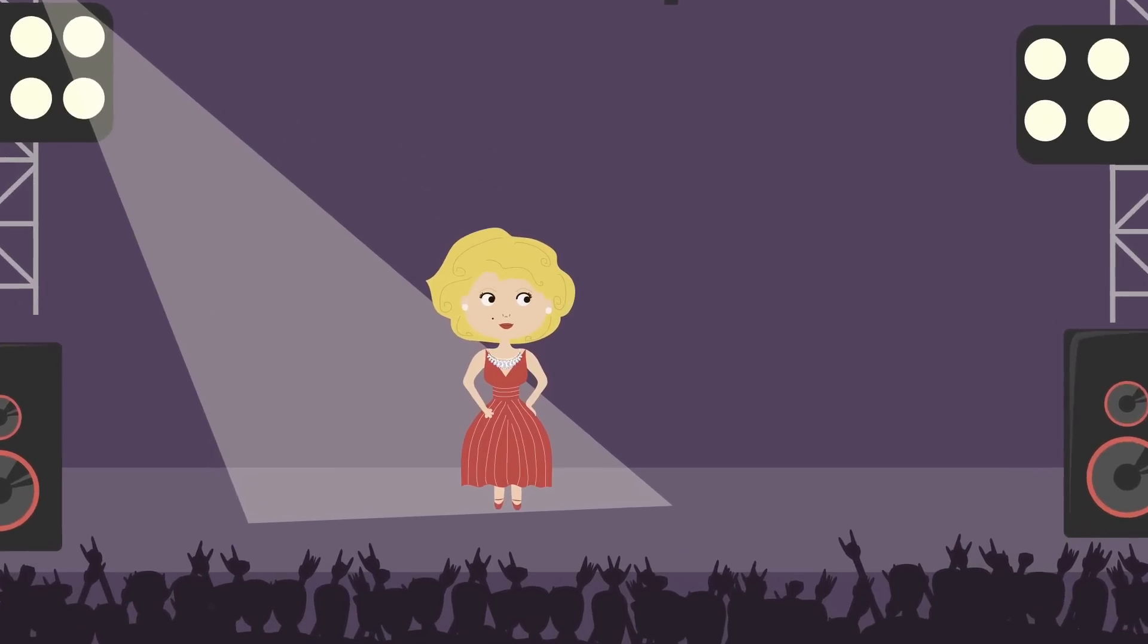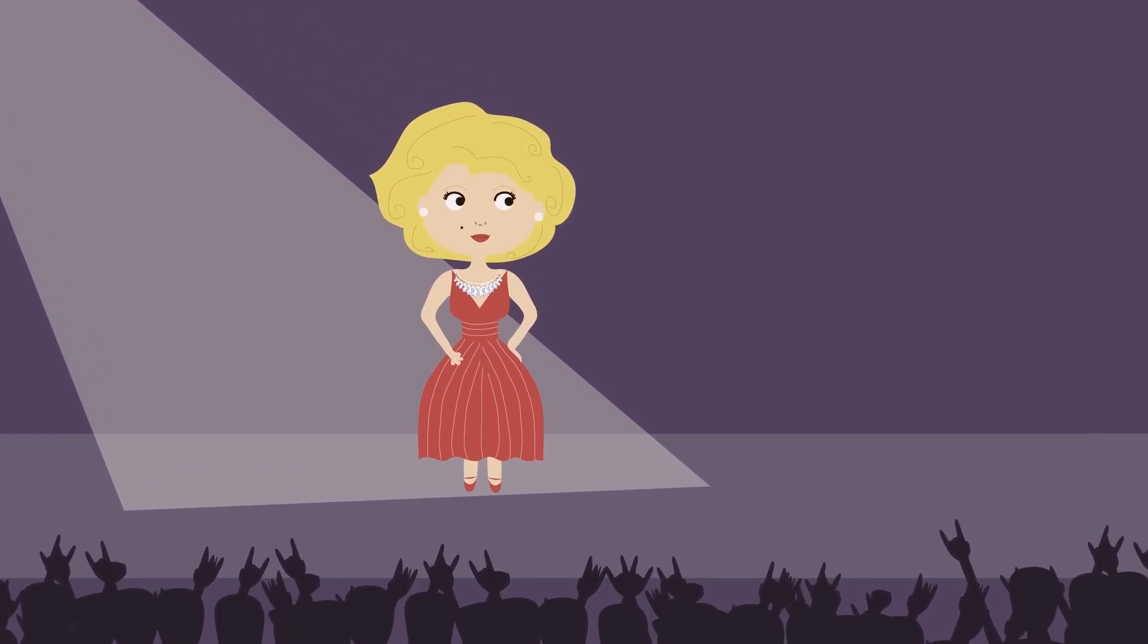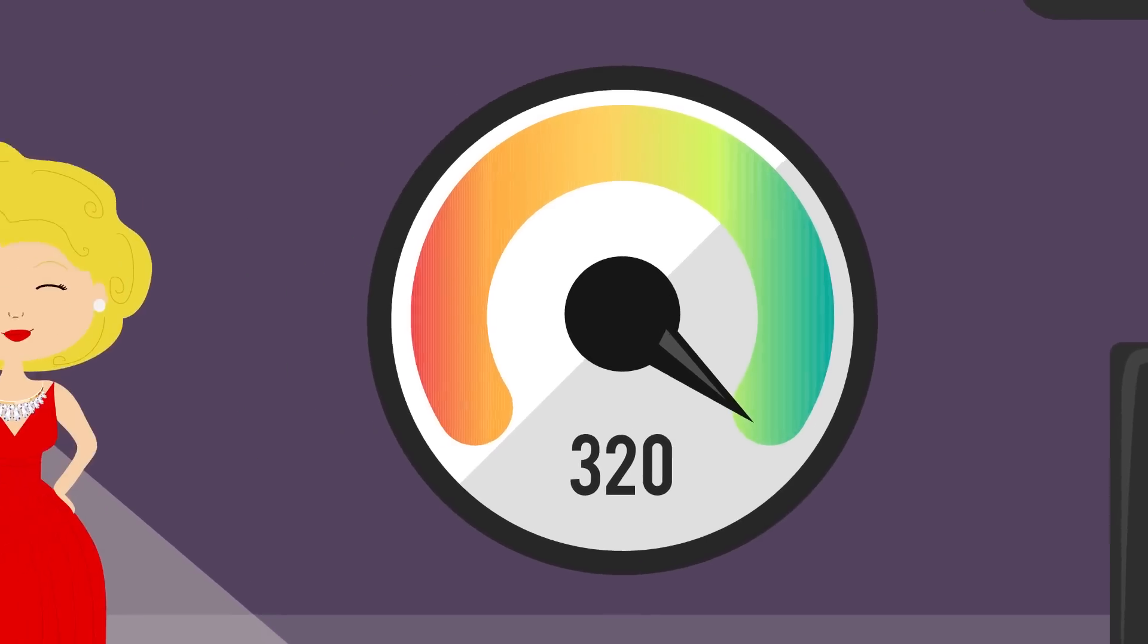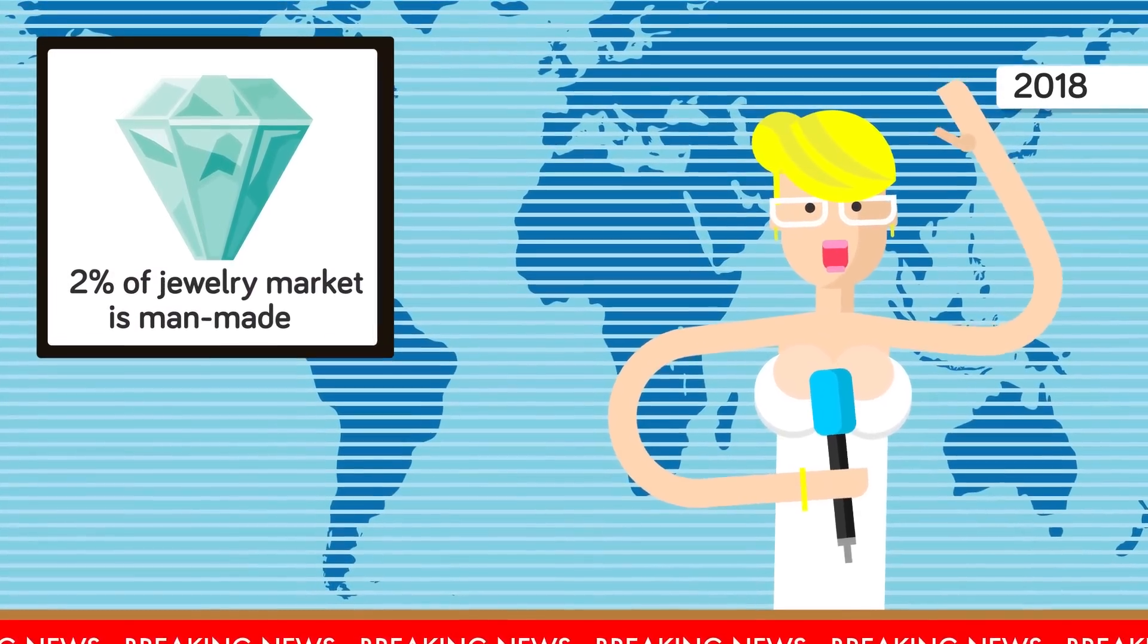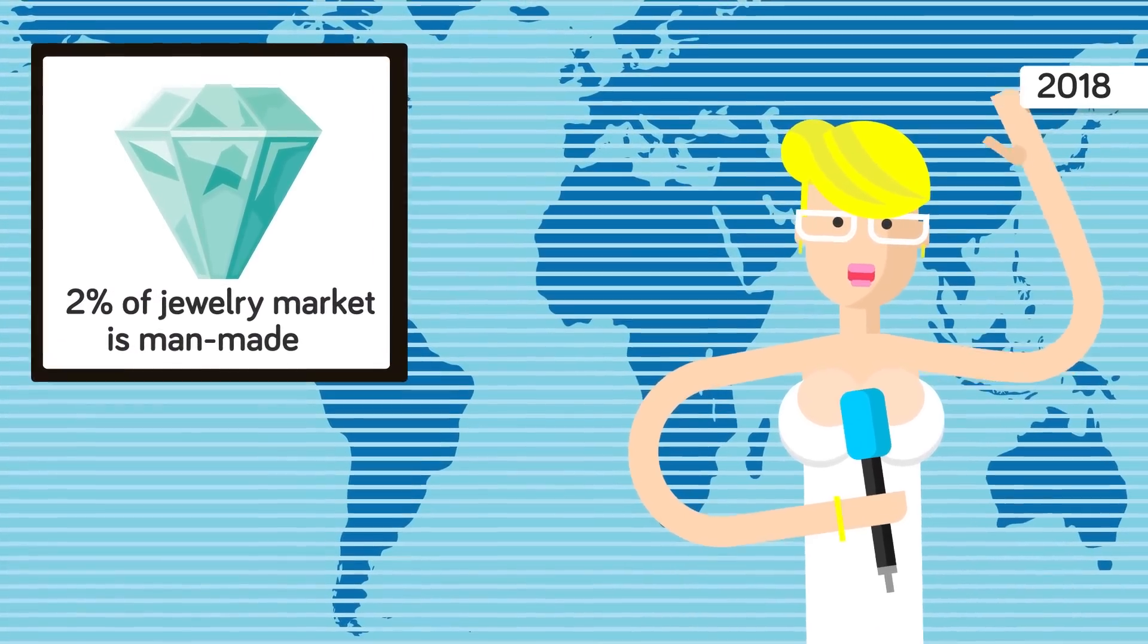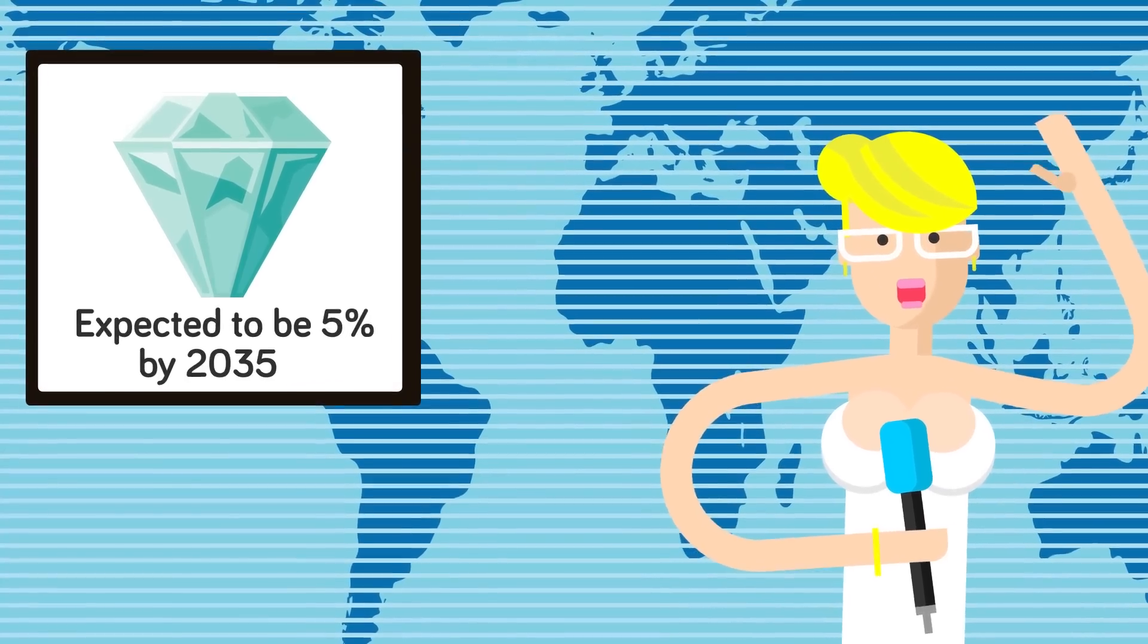We should stress that the two main ways of making these diamonds include using hydrogen, but there is also another way which involves using high pressure and high temperatures. That story said on this market in 2018 only 2 percent of the entire jewelry market were man-made diamonds, but in 2035 it is expected to be 5 percent.